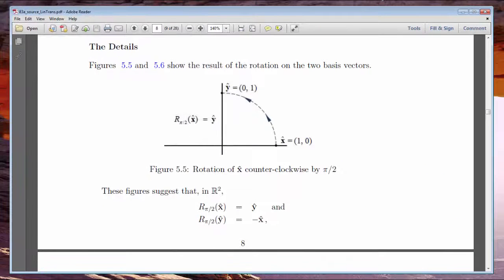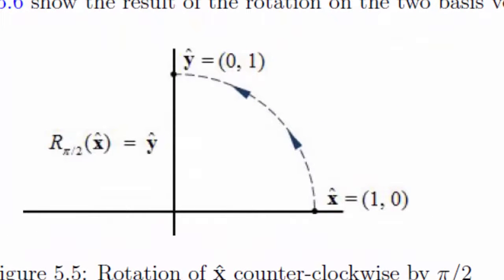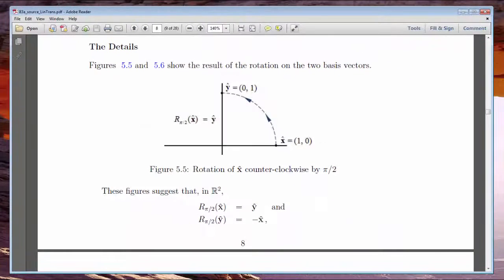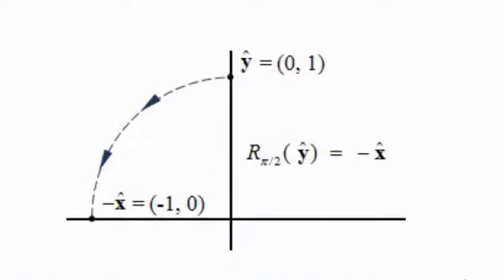An example of a linear transformation in R2 is one that rotates vectors counter-clockwise by an angle, in this case pi over 2 radians. That operator would map x-hat going into it into y-hat coming out. If we apply the same transformation to y-hat in, you can see we end up with minus x-hat out.